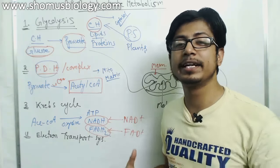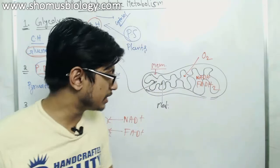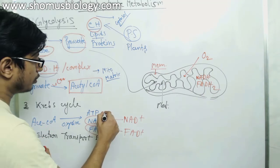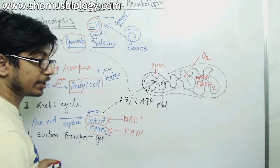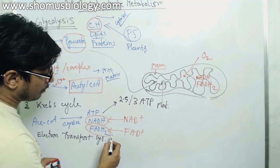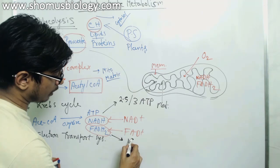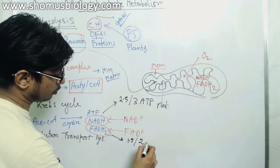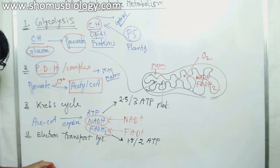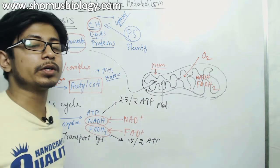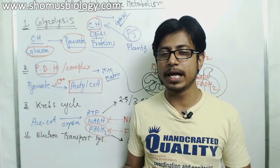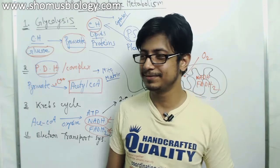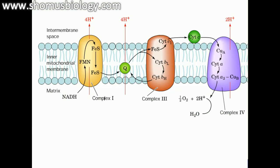NADH and FADH2 are more energetically valuable than ATP. One molecule of NADH yields approximately 2.5 to 3 ATP molecules after the electron transport chain, while one molecule of FADH2 yields approximately 1.5 to 2 ATP molecules. This is what makes the Krebs cycle so important for energy generation.